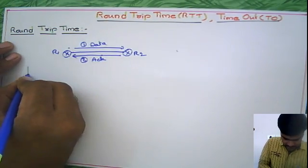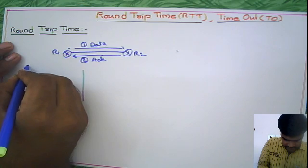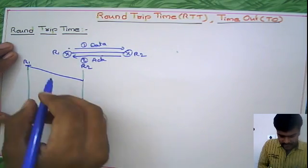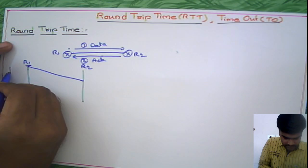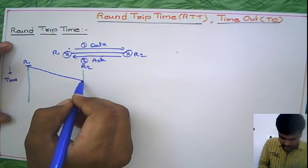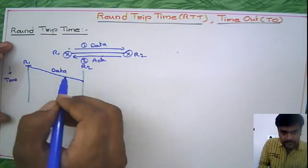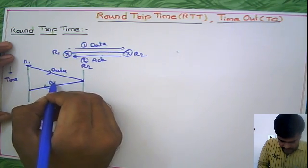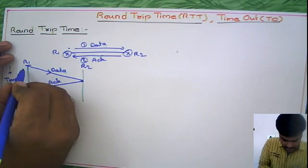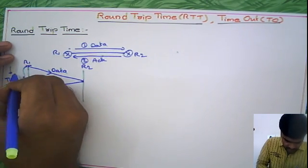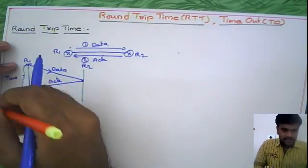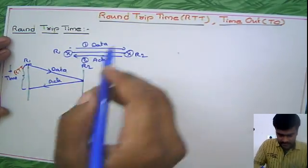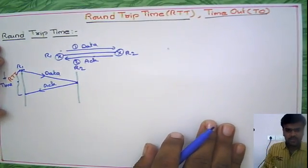Looking at a diagram, suppose you start transferring the packet from R1 to R2 — it takes a certain amount of time for data forwarding. Then R2 gives the acknowledgement for that packet. This total time is what we call round trip time.